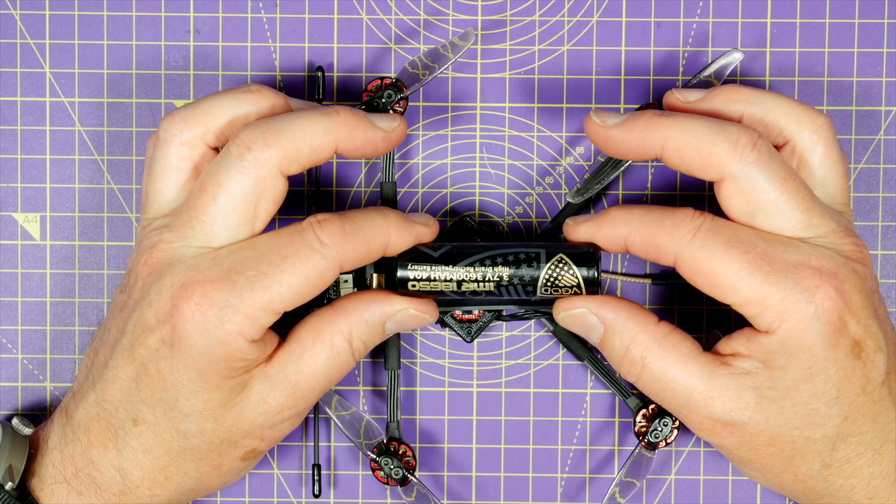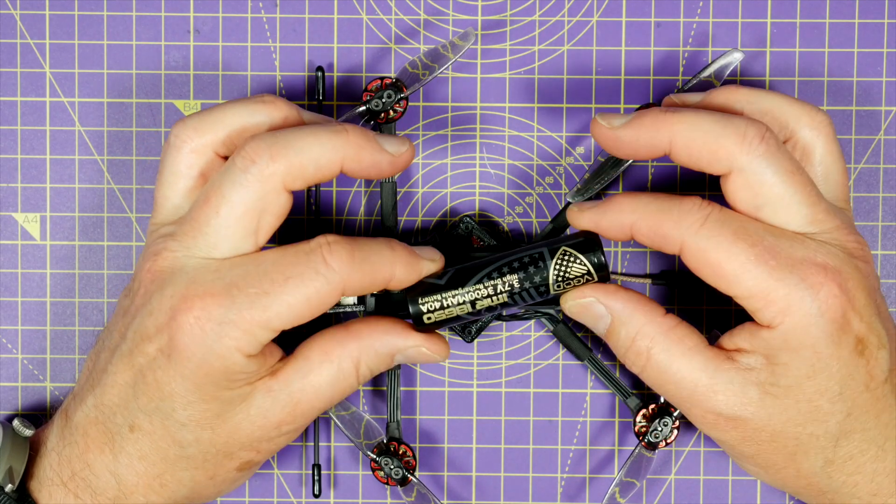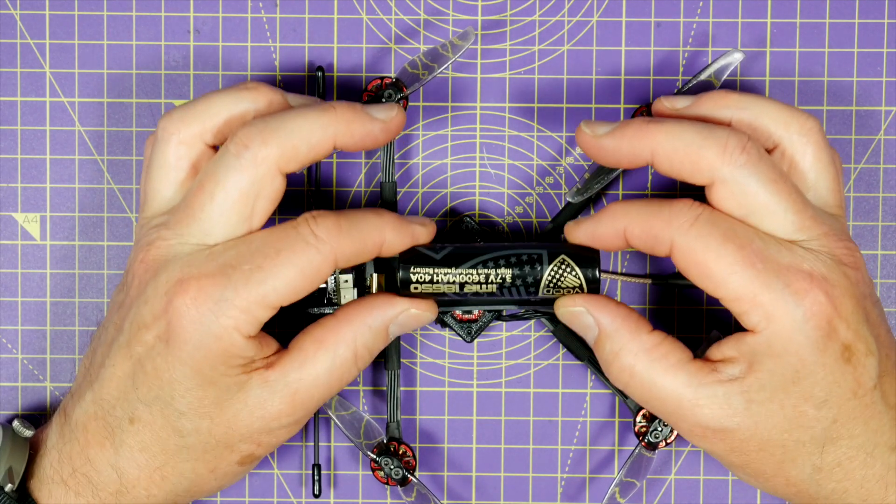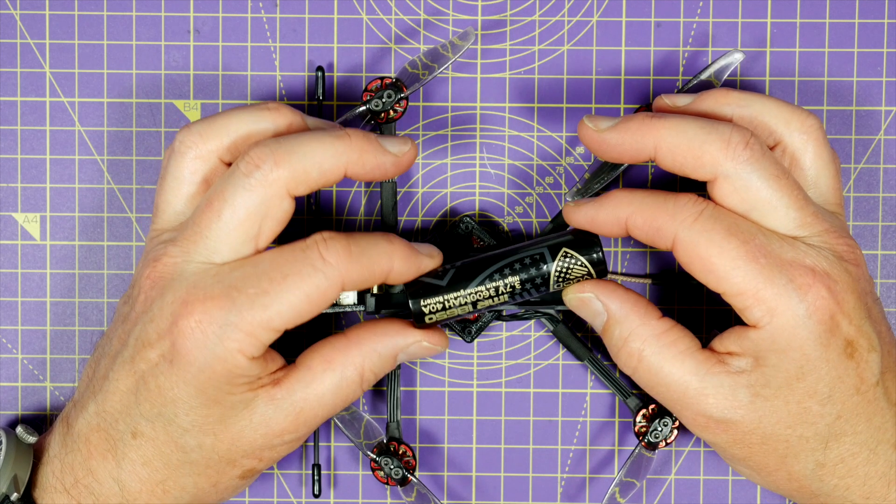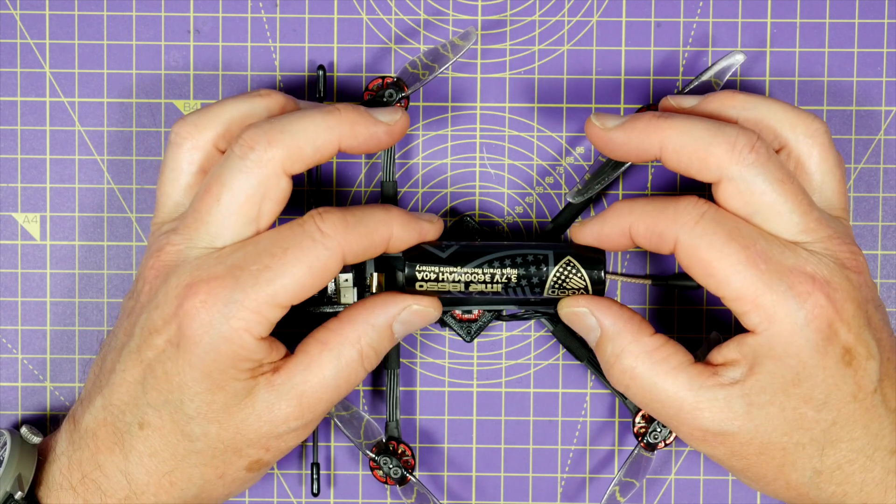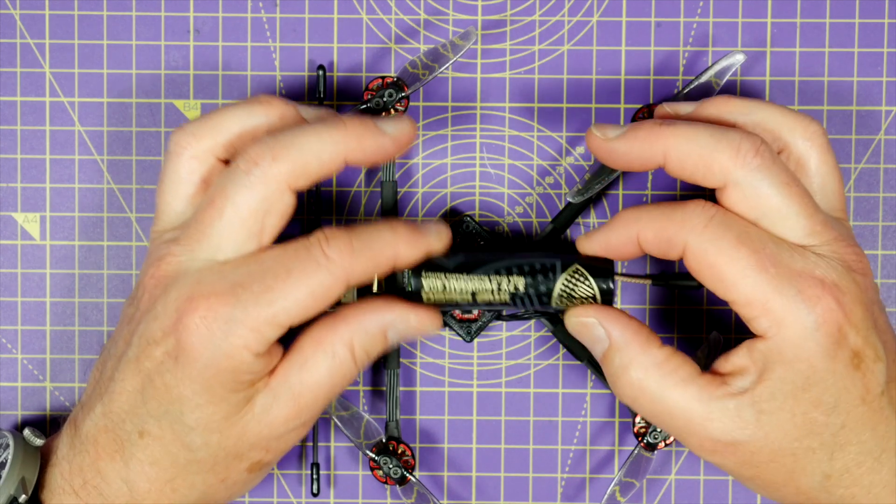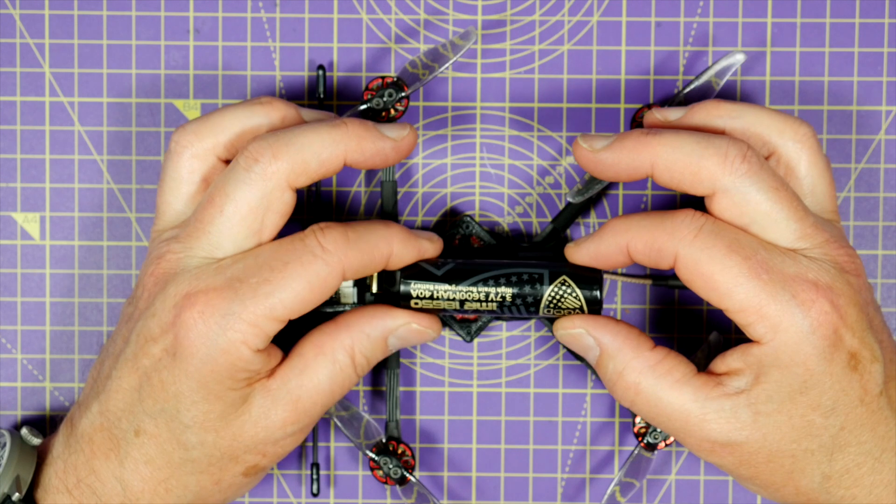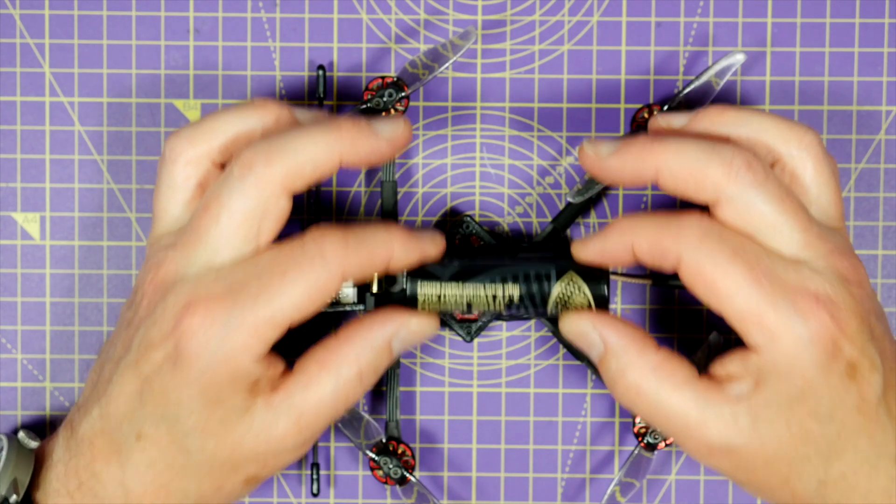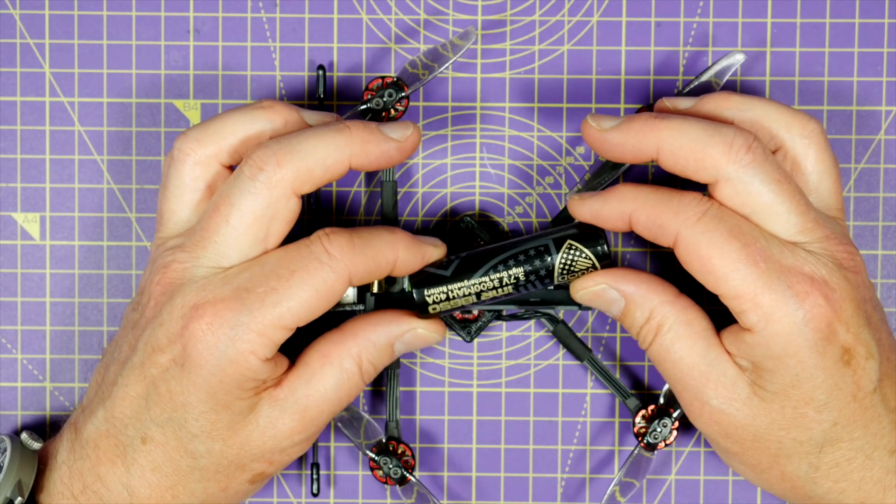And the discharge profile of these is very different. They'll drop pretty quickly down from 4.2V to about 3.8V as soon as you start flying. And they discharge fairly linearly down to about 3.2 volts. But they hang on for ages in that 3 to 3.2 volt range.